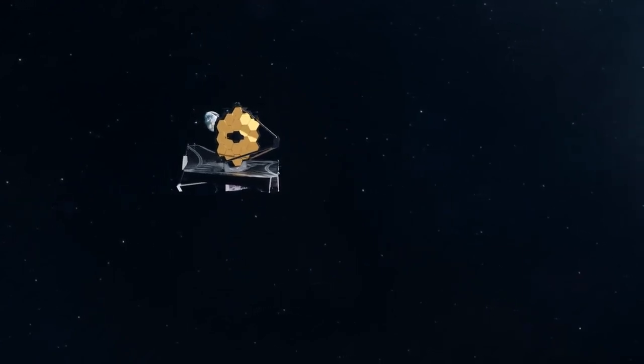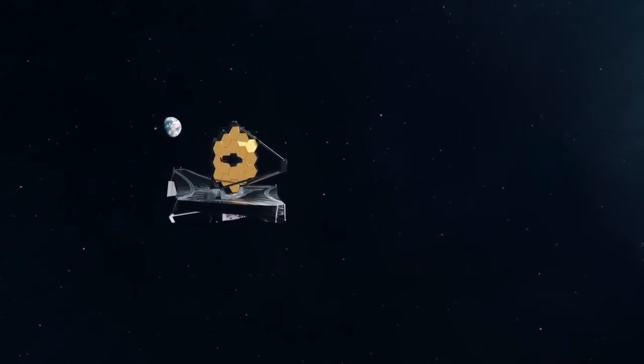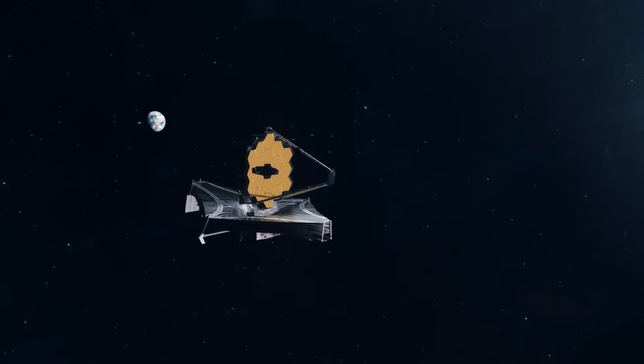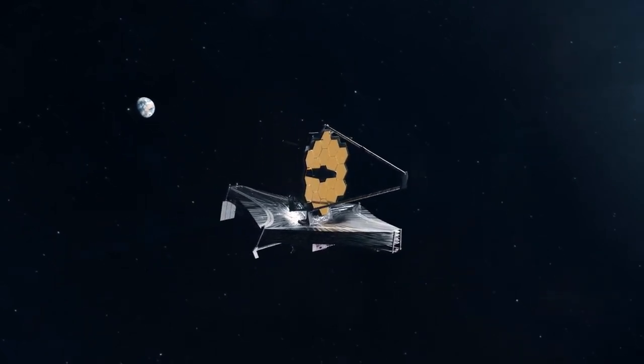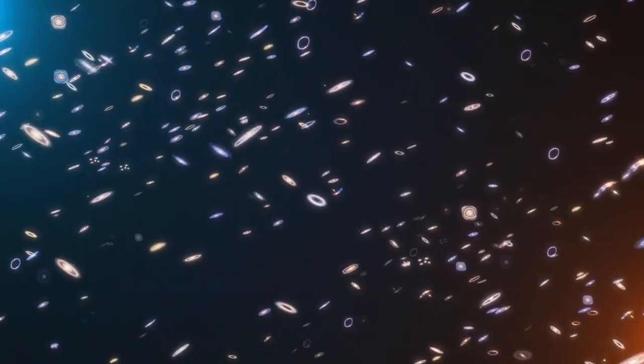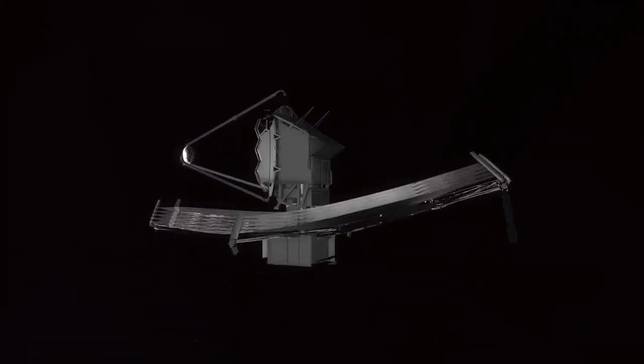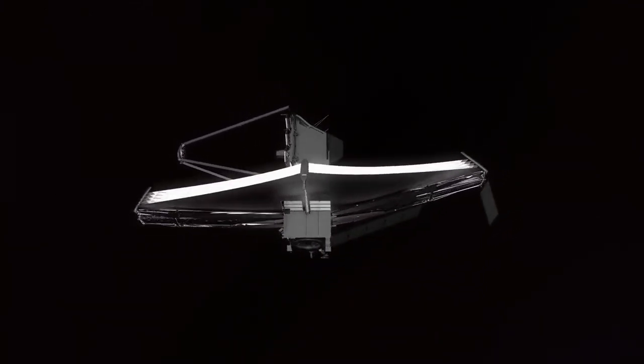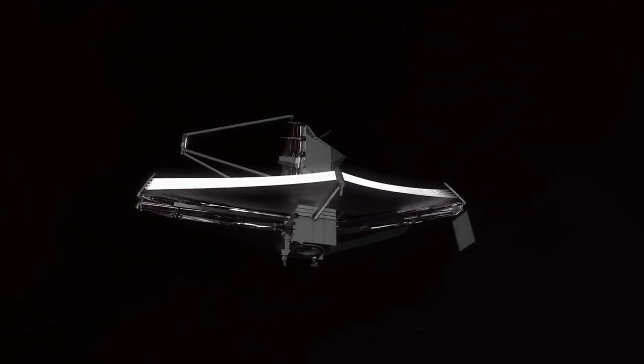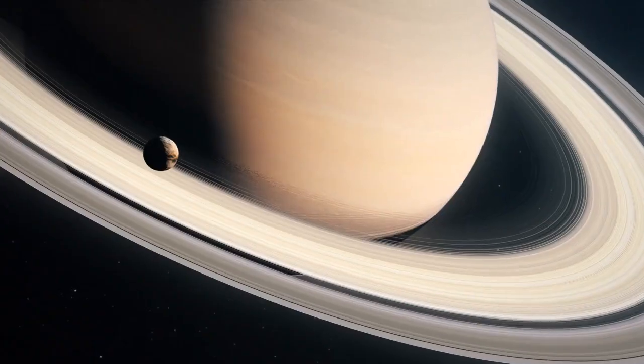And now the James Webb Space Telescope is identifying objects from the dark ages that, according to our best estimates, are fully formed galaxies. But how is that even possible? Since the launch of the James Webb Space Telescope, we've been gifted with some of the most incredible images of the universe we've ever seen.